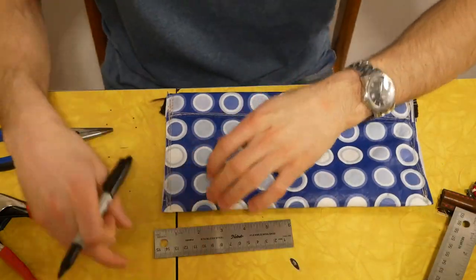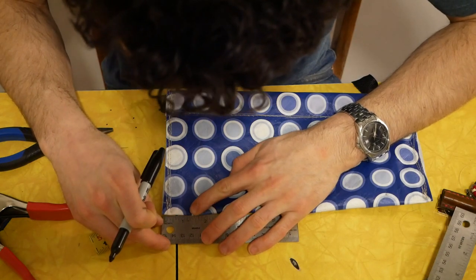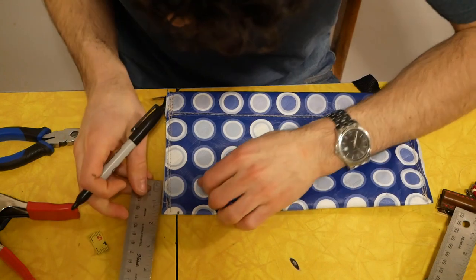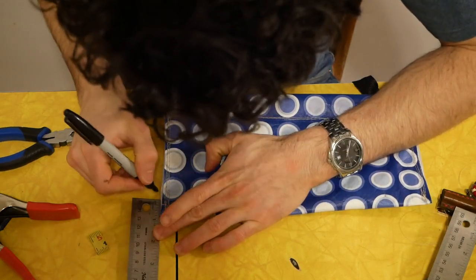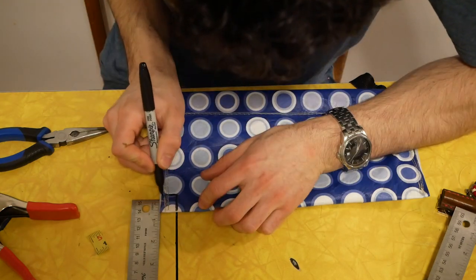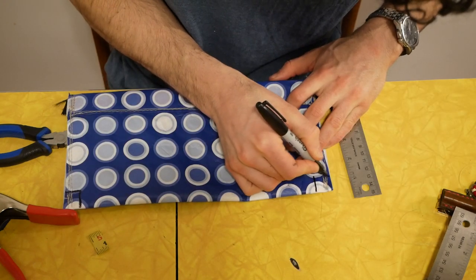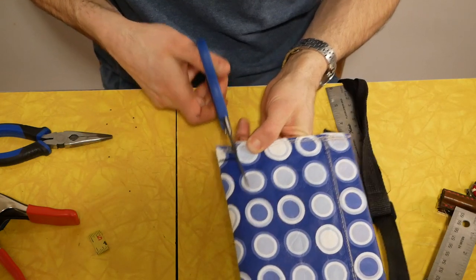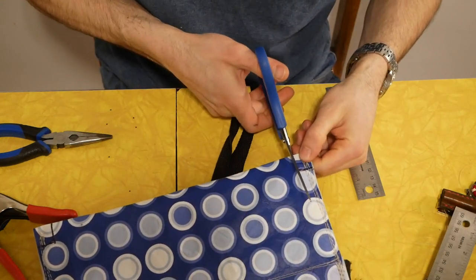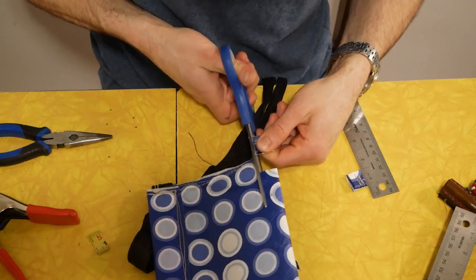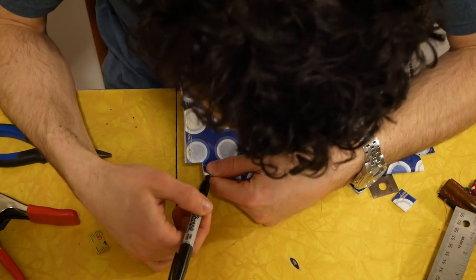The final step is to add some three-dimensionality to this pouch. Right now it's more of an envelope than a bag, and to fix this we're going to box the bottom corners. There are a few ways to do this, but the method that I'm going to use starts with cutting a small square out of each bottom corner. I made each of my squares three-quarters of an inch to a side, and this gave me relatively subtle boxed corners. If I were to make this pouch again, I would probably make these squares closer to one inch.